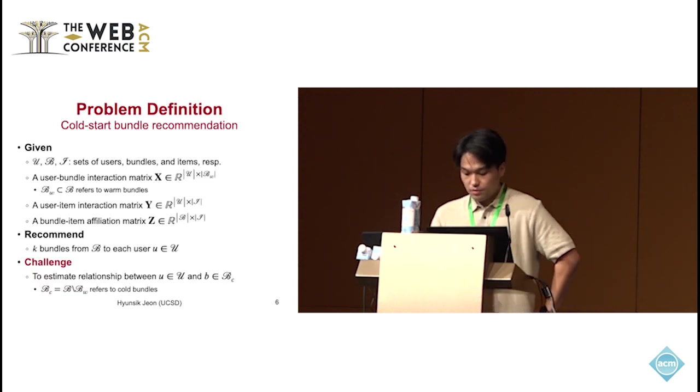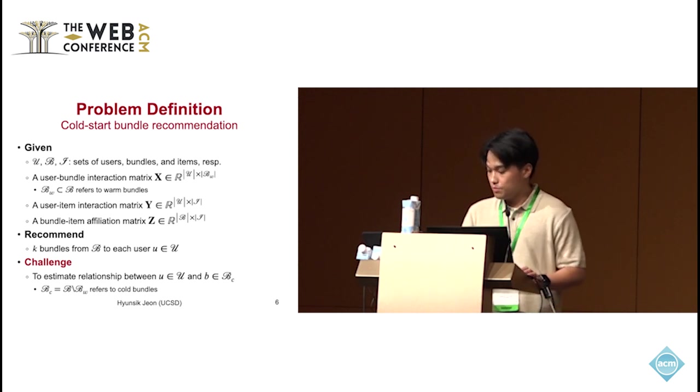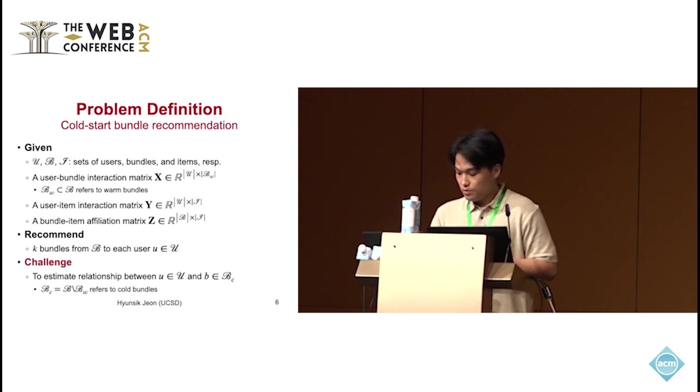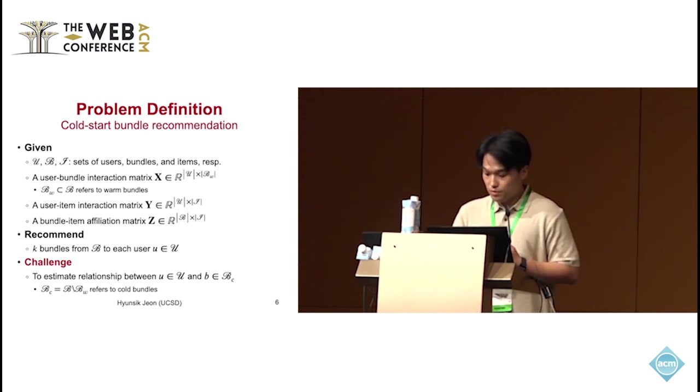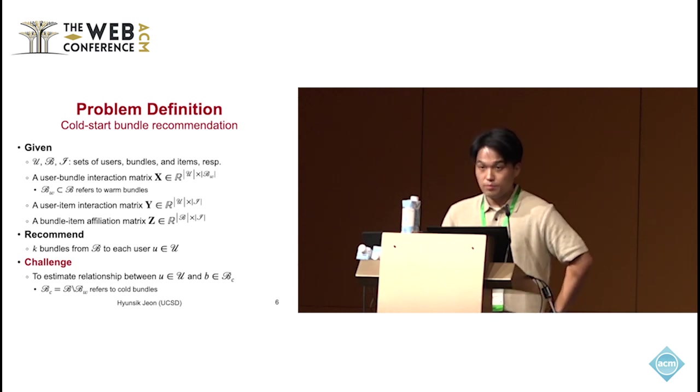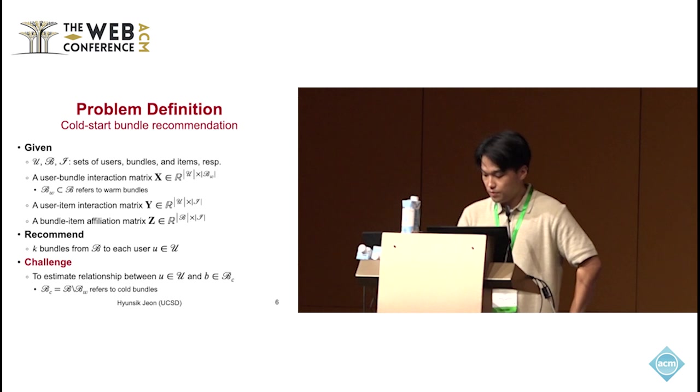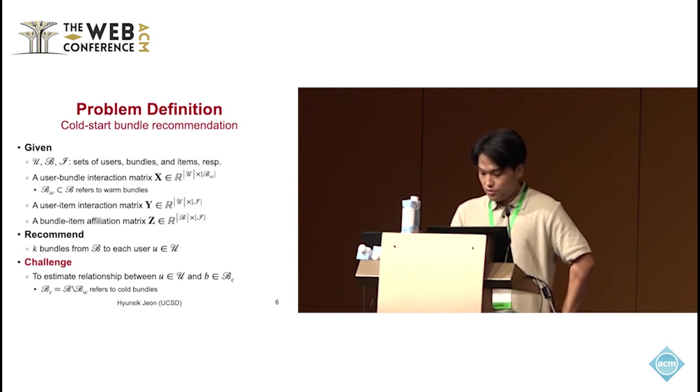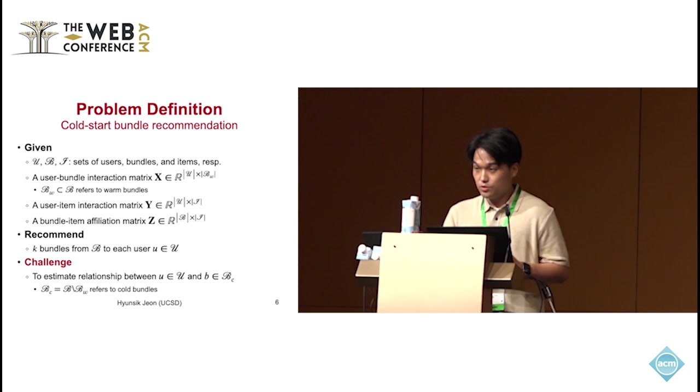So, this is the formal definition of the cold-start bundle recommendation problem. We are given sets of users, bundles, and items, and we have user-bundle interactions. We also have user-item interactions and bundle-item affiliations. Then, our goal is to recommend k-bundles from the set of all bundles to each user. The main challenge is to estimate the relationship between users and cold bundles only using their affiliation information.